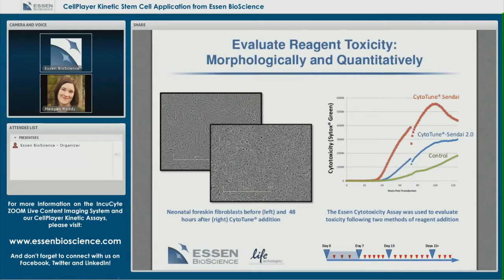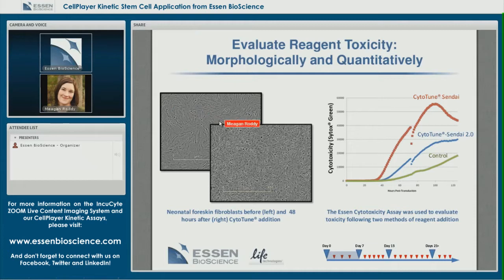Some amount of cytotoxicity is expected after using a reprogramming reagent. If you're interested in analyzing the toxicity of your reprogramming reagent, you can do so by observing morphological changes of the cells, or by utilizing a cell-impermeable DNA dye if you have wells to sacrifice. By observation of phase images, you can make qualitative observations about toxicity. Here I have neonatal foreskin fibroblasts — on the left before addition of CytoTune Sendai virus, and on the right those same cells in the exact location 48 hours after addition. The toxicity of the reagent has caused obvious morphological changes and cell distress.